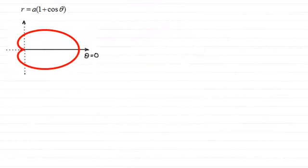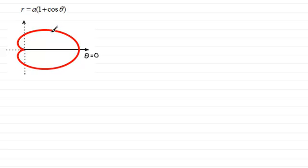In this video I want to show you how we go about finding tangents to a polar curve — say something like this — which are parallel to the initial line theta equals zero. To demonstrate this I've got here the curve which is a cardioid with equation r equals a times one plus cos theta. And what I'm going to show you is true for all polar curves.